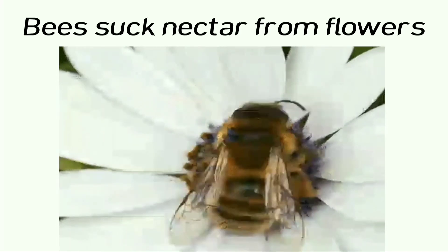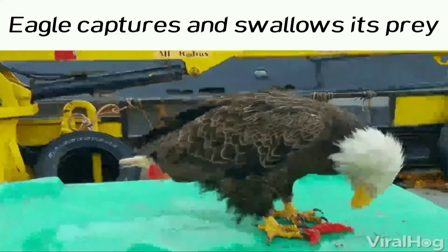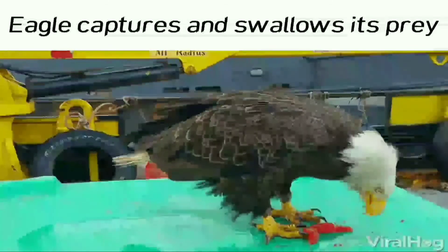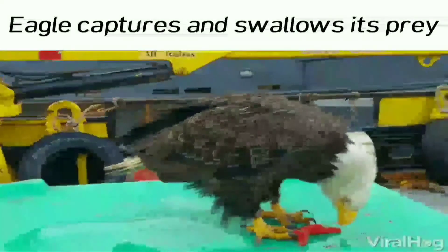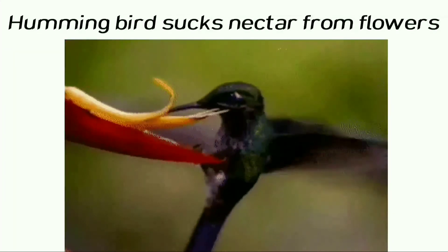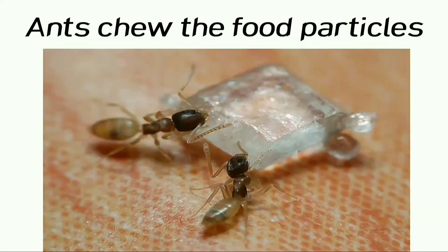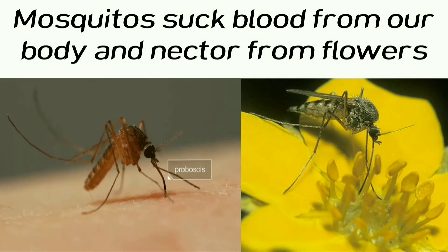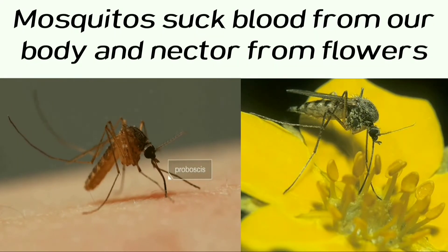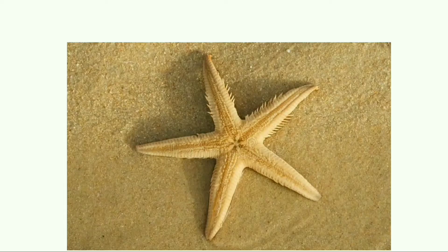For example, bees suck the nectar from flowers, the eagle captures and swallows its prey, the hummingbird sucks nectar from flowers and strips food particles, and mosquitoes suck blood from our body as well as nectar from flowers.